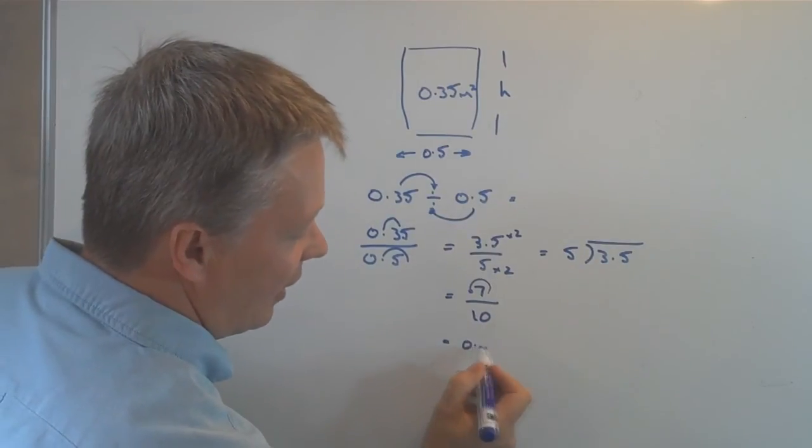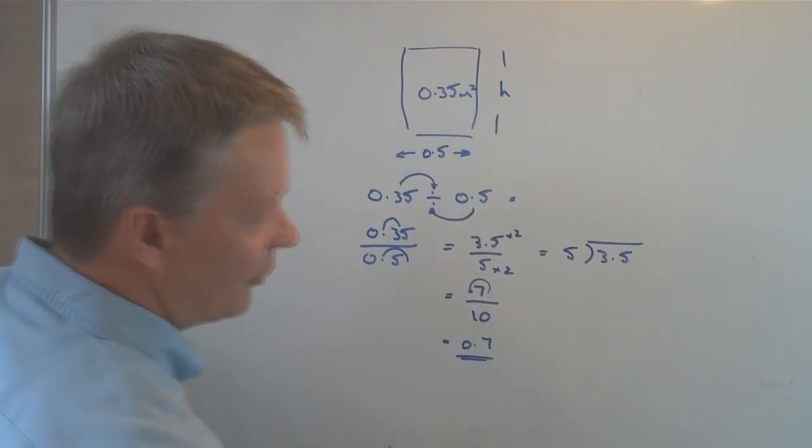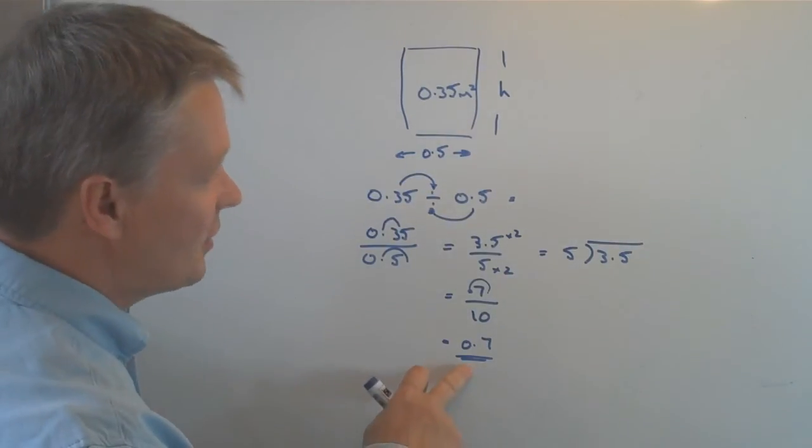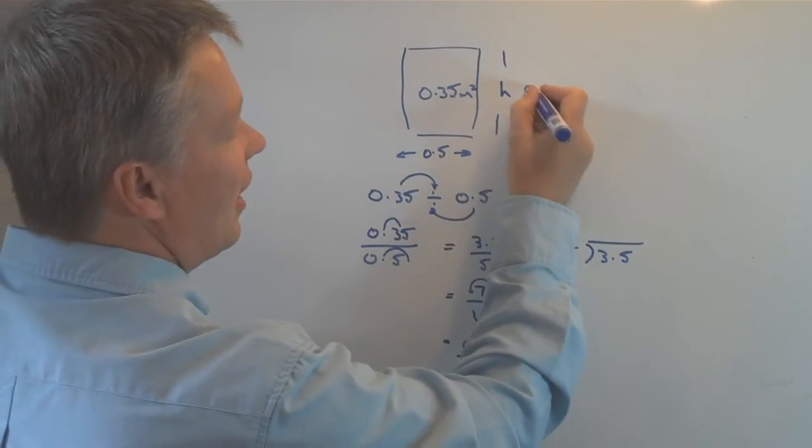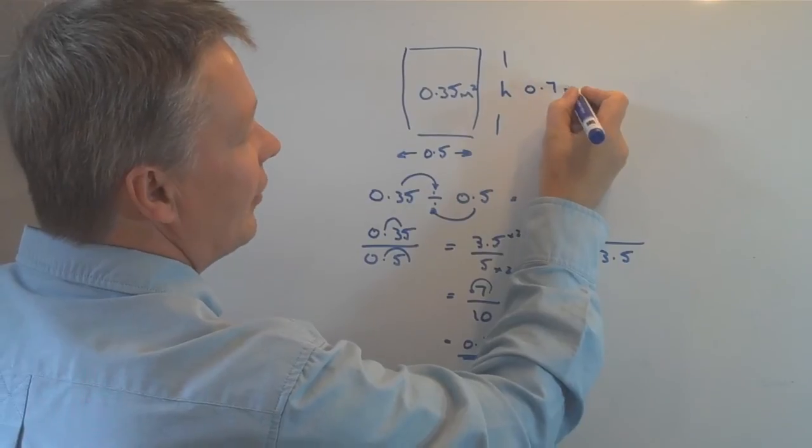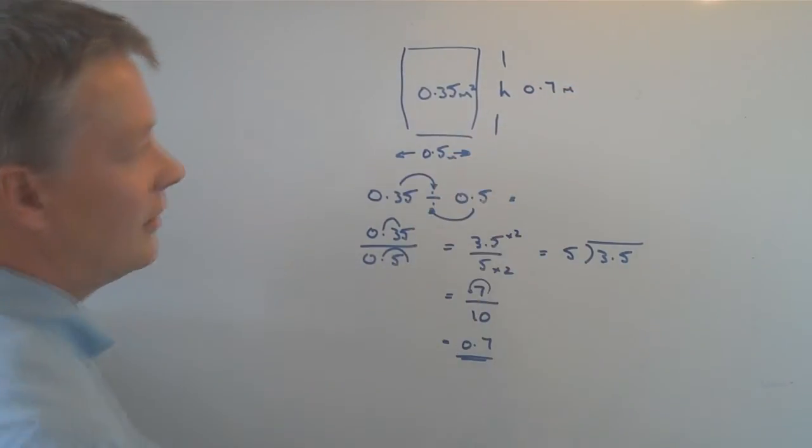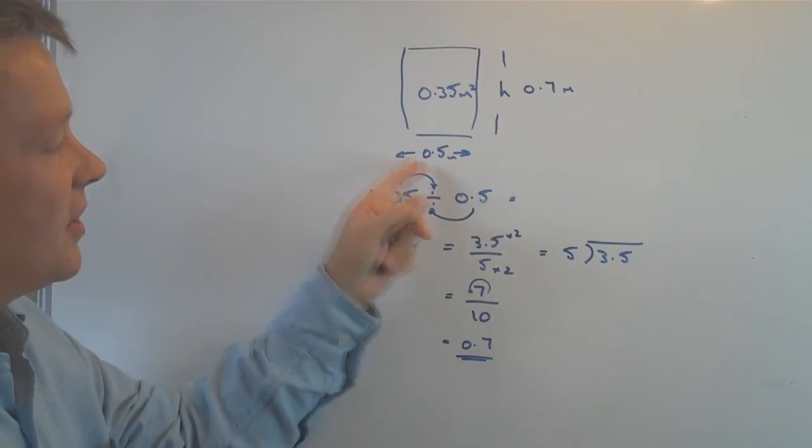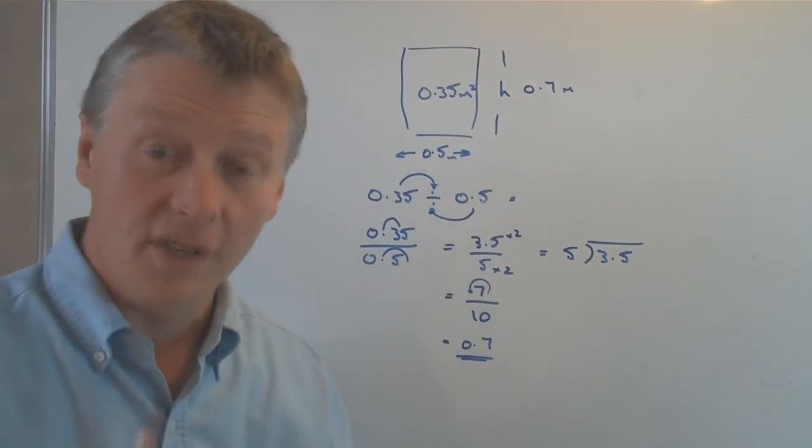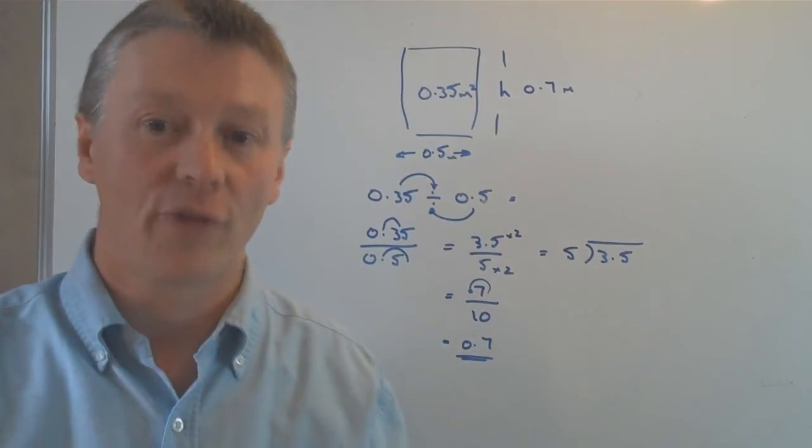So there's my decimal point, the seven, and I'm going to move it one place over, which will give me a decimal equivalent of 0.7. So the answer to my question is that this height will be 0.7 meters. In other words, 0.7 times 0.5 is an area of 0.35.